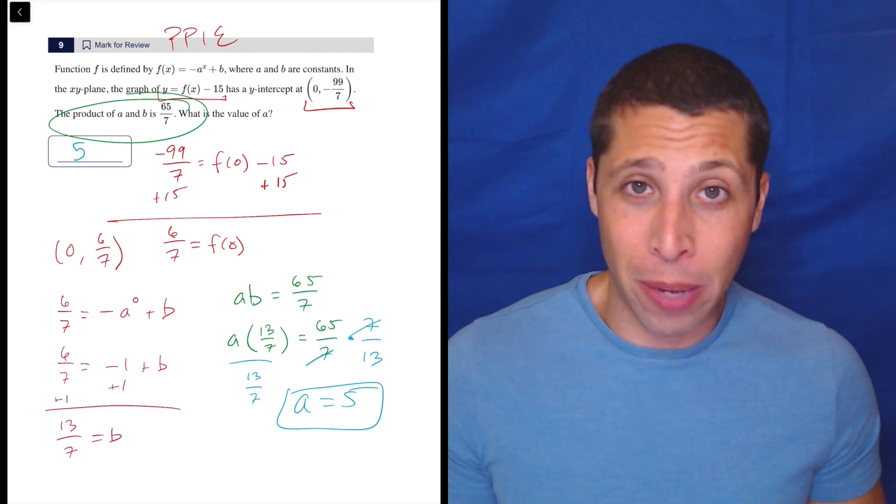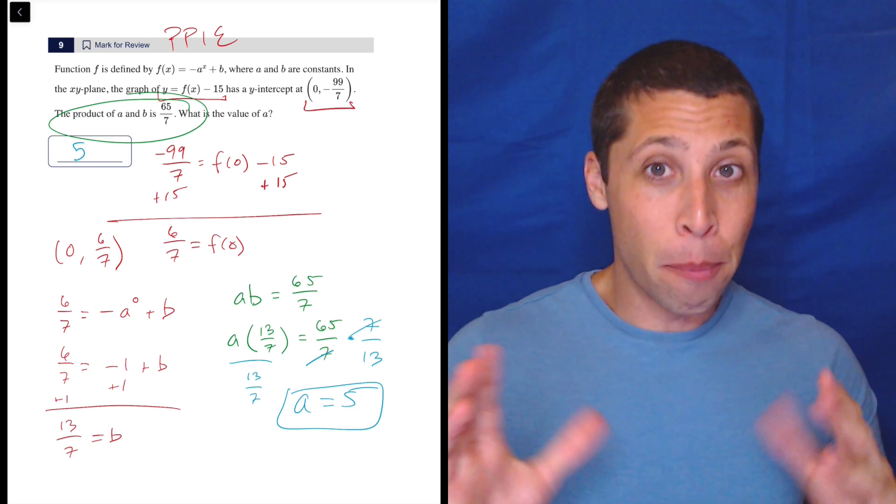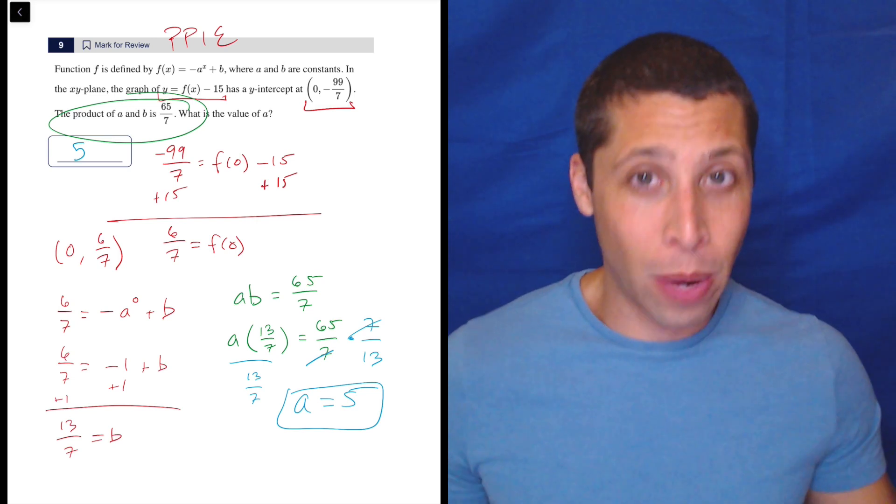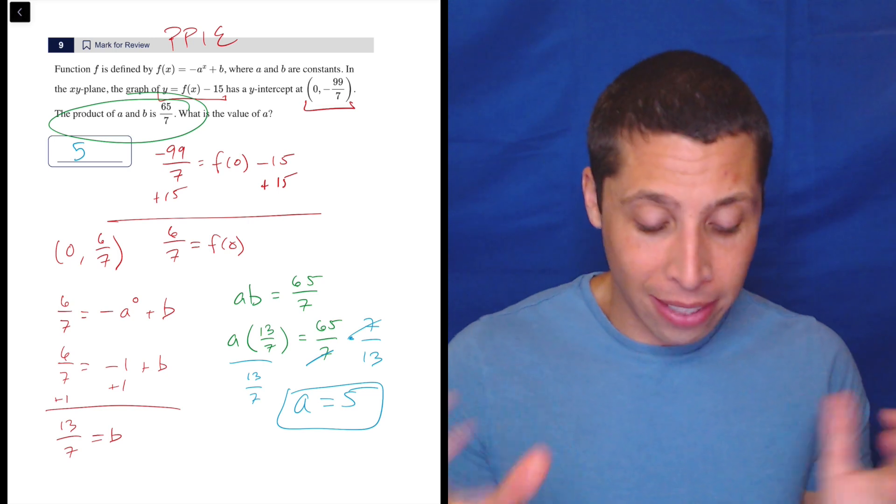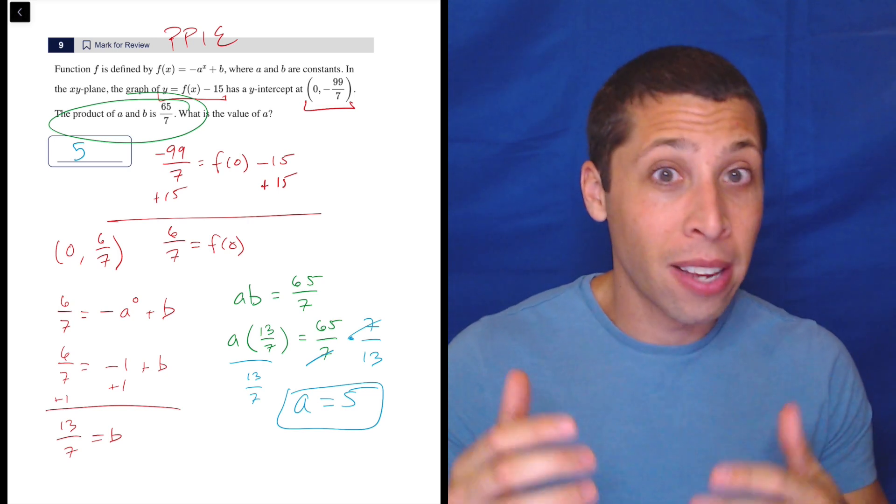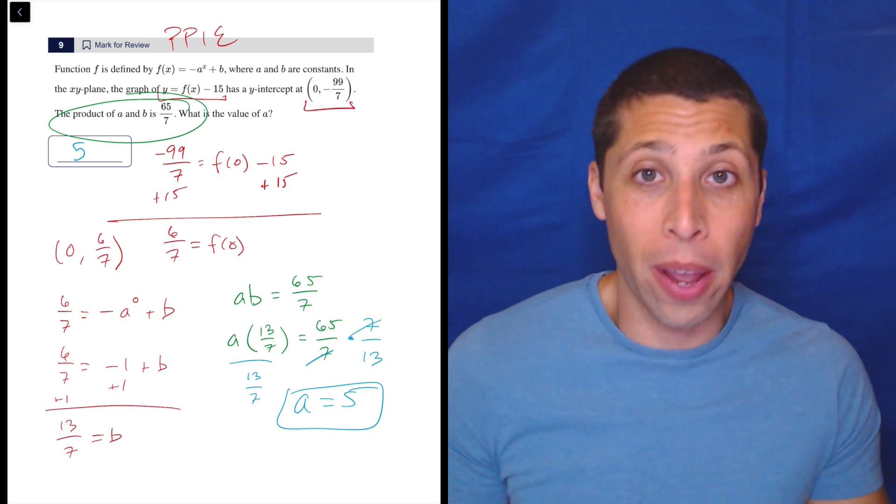And I think that's why I thought Desmos would be helpful here—it looks like I'm going to have to deal with some crazy properties of exponentials. But it's a follow instructions question. We have a point, we have an equation, we put it in. They tell us that A and B has a product of 65/7. That's an instruction. Just write that out. Write it out like I did as an equation and then work your way there.